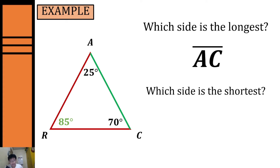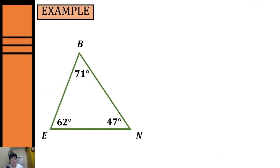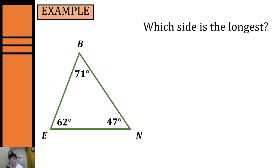Next, let's identify which side is the shortest. To identify the shortest side we have to identify first the smallest angle. The smallest angle is angle A with 25 degrees. Using the Angle Side Inequality Theorem, the opposite side of our smallest angle will be the shortest side, so our shortest side will be side RC.